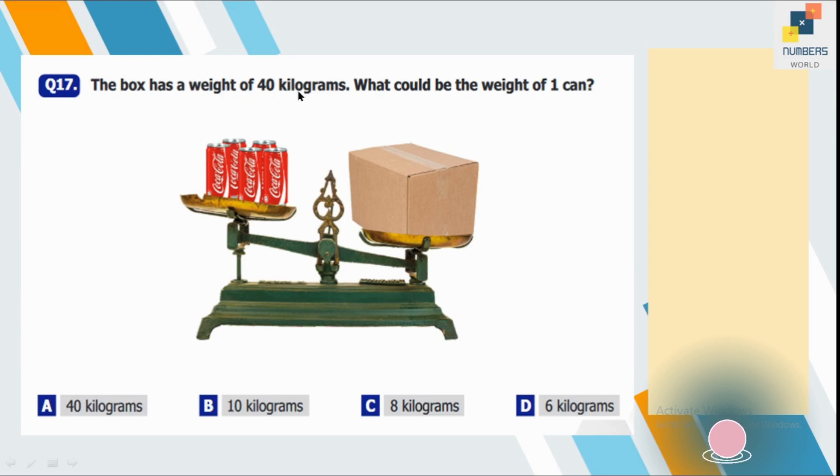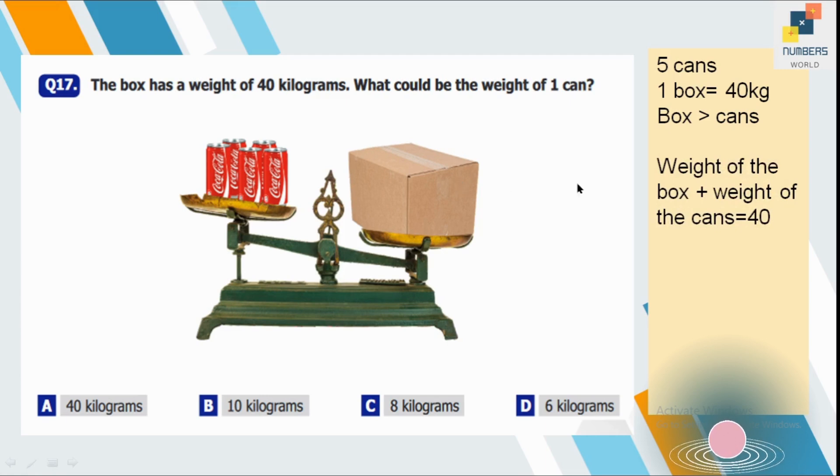Question number 17. The box has a weight of 40 kilograms. What could be the weight of one can? So here we have five cans, one box of 40 kg and then there is another hint that is given in the form of the picture that the weight of the box is greater than the cans. So it means we have to consider the weight of the carton as well. So the box we are talking about, it's including the weight of the carton and the weight of the cans. Then the total is 40 kilograms.